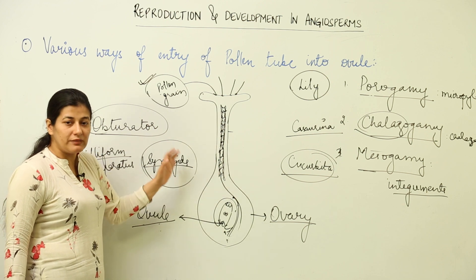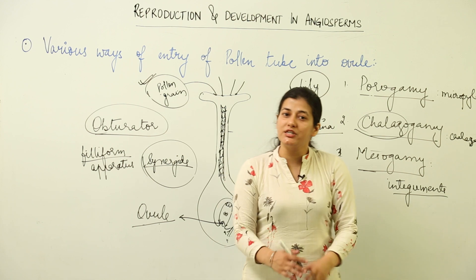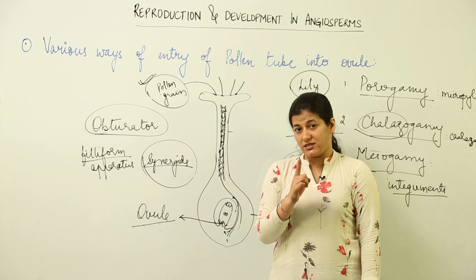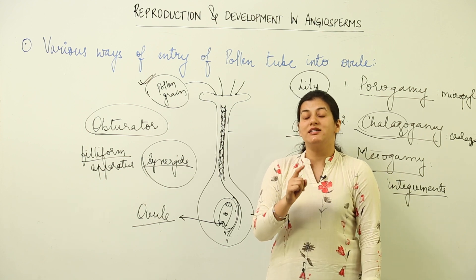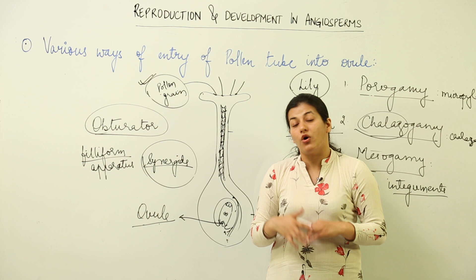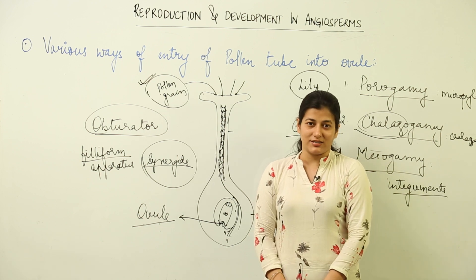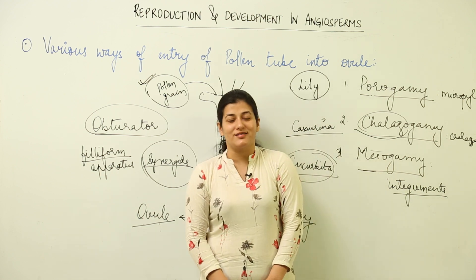We discussed how it comes in contact with the synergids and passes on the male gamete to the egg, which is the female gamete waiting for the male gamete, so that fertilization's first step, that is the generative fertilization or the syngamy, takes place, followed by the vegetative fertilization. This is all about this topic that we have to understand.